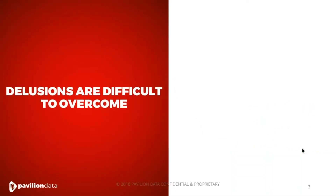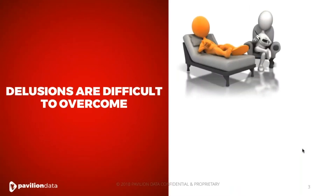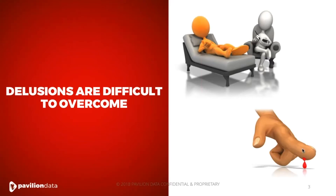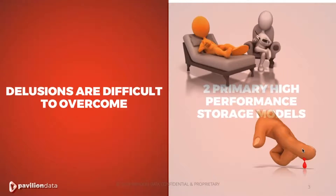So let's get right into it. Delusions are difficult to overcome, and I like telling stories. This is a story about a young man who believed he was dead. His parents were worried, so they sent him to a psychiatrist. The psychiatrist spent the whole hour trying to convince the young man he wasn't dead and wasn't getting anywhere. So he pulled out his medical book and showed the young man: 'Look what it says here — dead people don't bleed. Do you believe that?' He shrugged and said, 'Okay, yeah, I guess I believe that.' So the psychiatrist whips out a pin, sticks him in the finger, and he starts to bleed. He says to the young man, 'So what does this tell you?' And the young man's eyes get really big and he says, 'Oh my God, dead people do bleed.' Delusions are difficult to overcome.